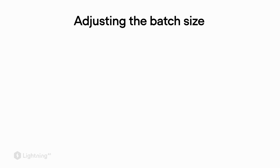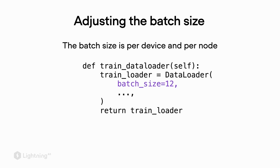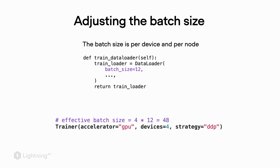Another key difference is that DDP does not split the batch — if we specify a batch size in the data loader, each GPU receives a mini batch of that full size. For example, with batch size 12 and four GPUs, each GPU gets a mini batch of size 12. This introduces the concept of an effective batch size: with four GPUs each receiving 12 samples, the effective batch size is 48 (4 × 12), because we collect gradients from four mini batches and average over them.